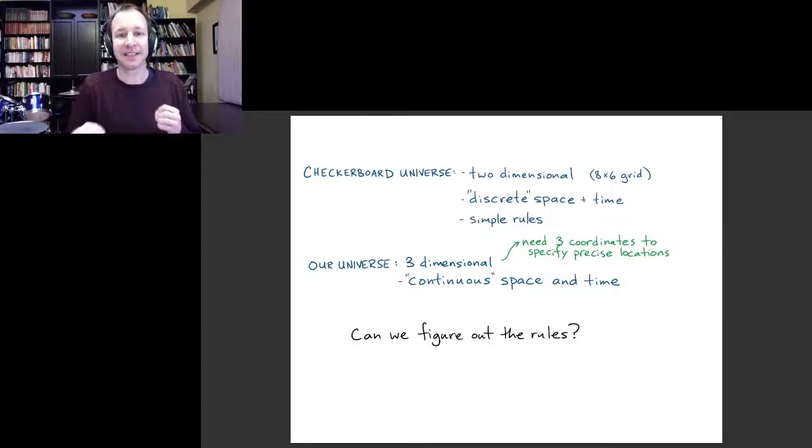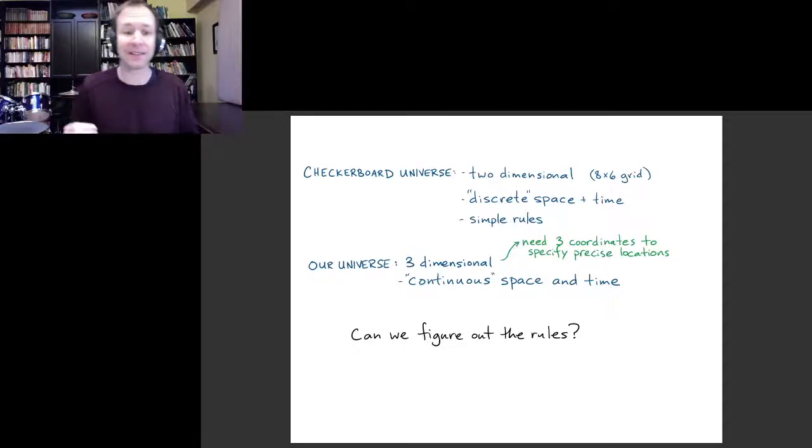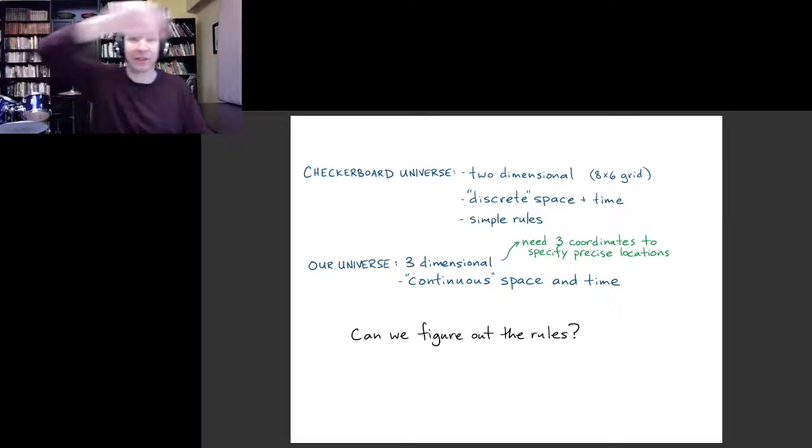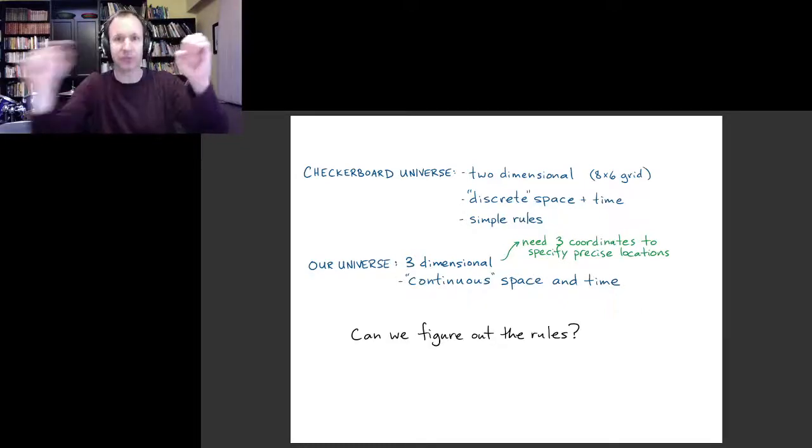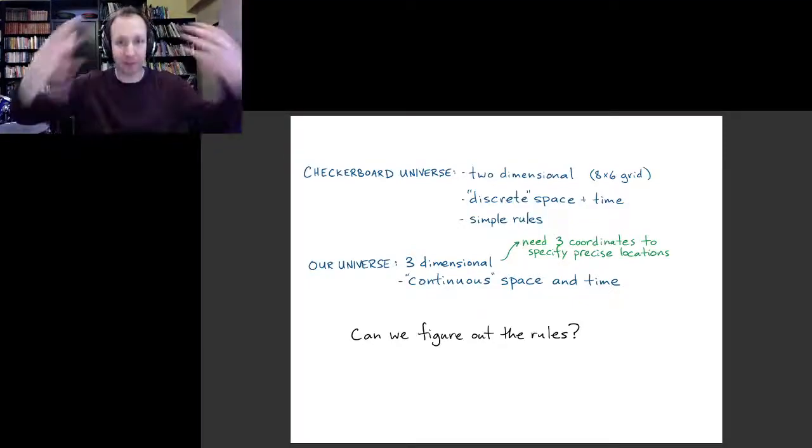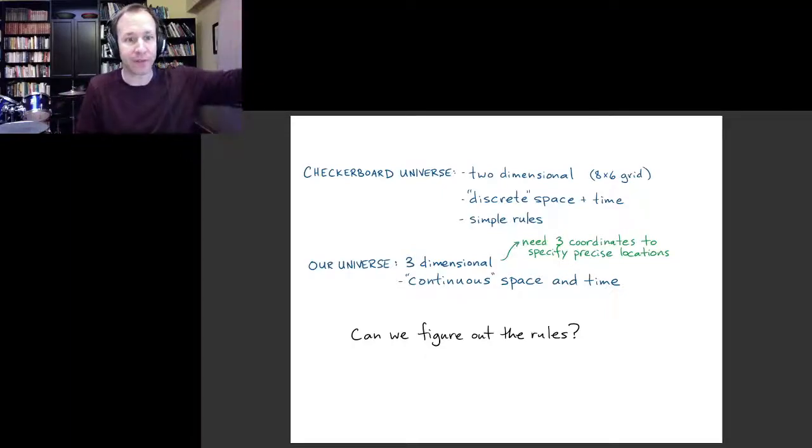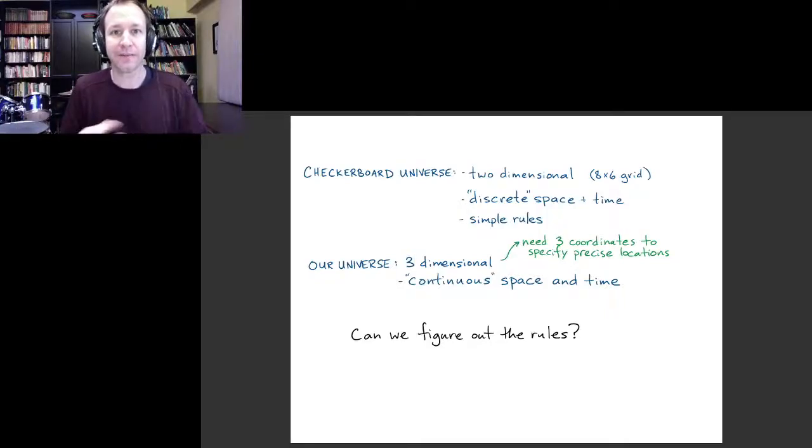The next observation is that instead of this discrete universe that we had in the checkerboard, we have a continuous universe. Or as far as we can tell, objects can be at any kind of location that you could imagine. You could have an object here or here or at any position in between. Similarly, time seems to move along continuously. Things can happen basically at any time, not just even numbers of seconds. So we have various kinds of objects, and at a fundamental level, at any given time, these things have positions and they have velocities. What we want to do is start to figure out the rules for how those positions and velocities will change with time.